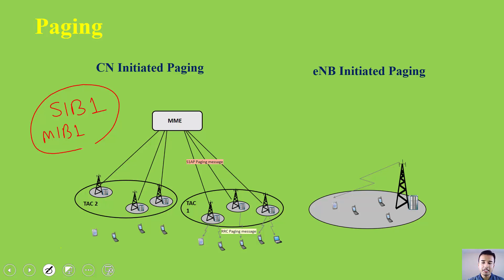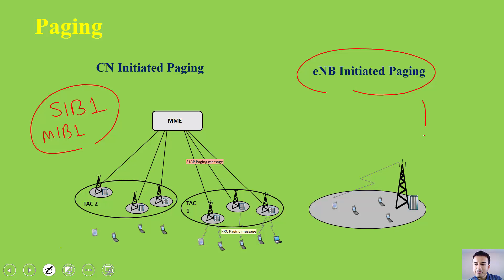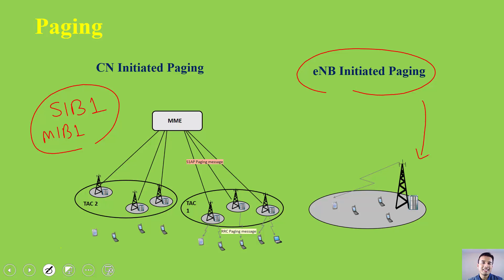However, if certain system information blocks change, that system information arrives as a result of eNodeB initiated paging. As you can see in this diagram, the dynamic system information — whenever it is changed — will come as a result of eNodeB initiated paging, whereas the static system information will always appear in every radio frame.